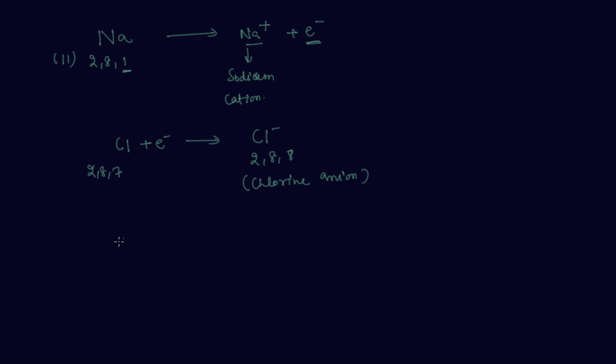Or you can show it like this: chlorine has 7 electrons and sodium has only one electron in the outermost shell, so it comes here and forms a bond with Na. This is Na+ and this is Cl-.